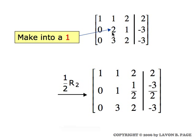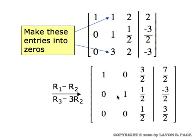The next task is to make this two into a one, which we do by multiplying row two times one-half. With the one now in that spot, we need to turn the other entries in that column into zeros. Row one minus row two will zero out one entry, and row three minus three times row two will zero out the other. Performing these two row operations finishes our work on the first and second columns.